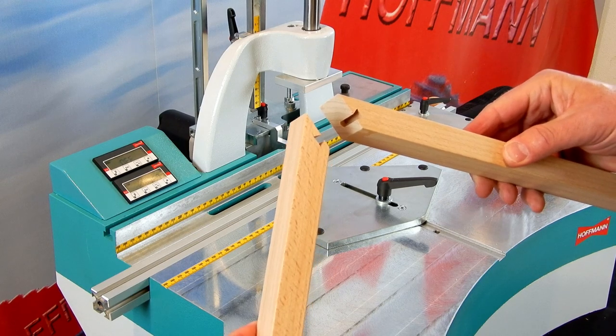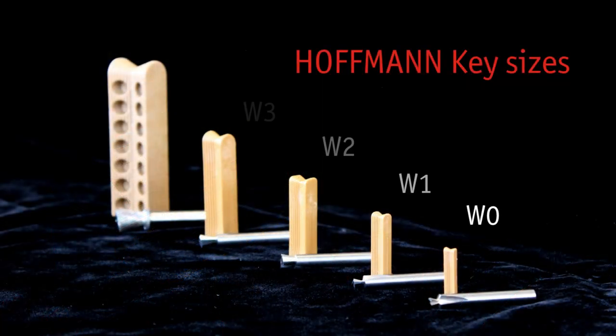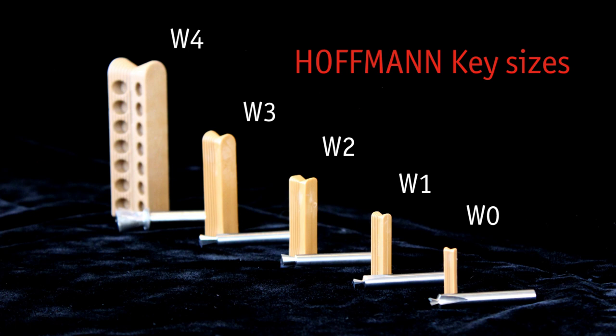Let me show you how to join some corners. Depending on the workpiece dimensions and application, the appropriate Hoffman key is chosen. W0 for very narrow moldings, W1 for small profiles, W2 as the cabinet makers key, W3 for higher strength applications and W4 is used in the post and beam industry. Hoffman offers the right key for any situation.